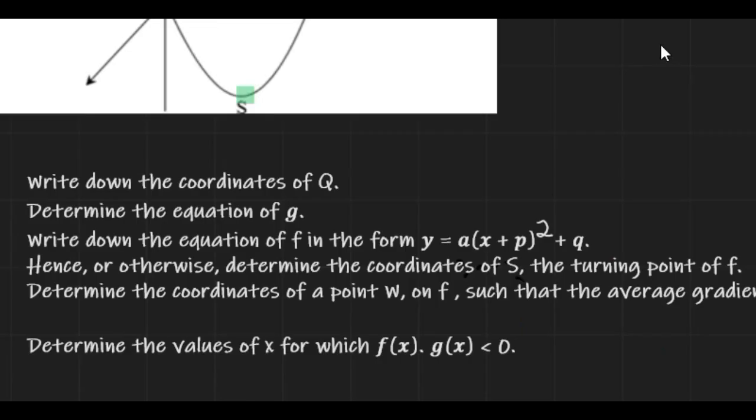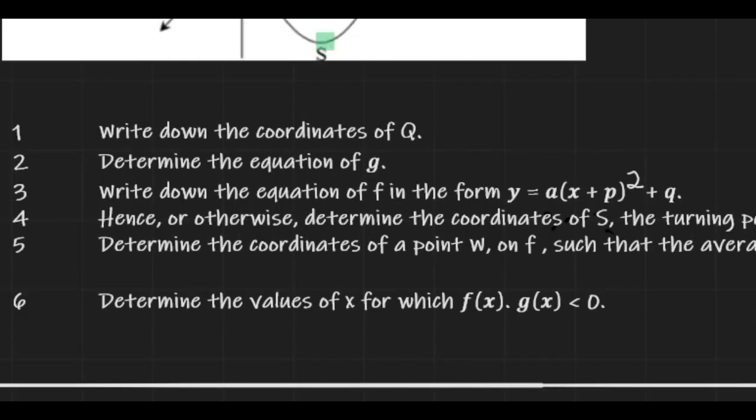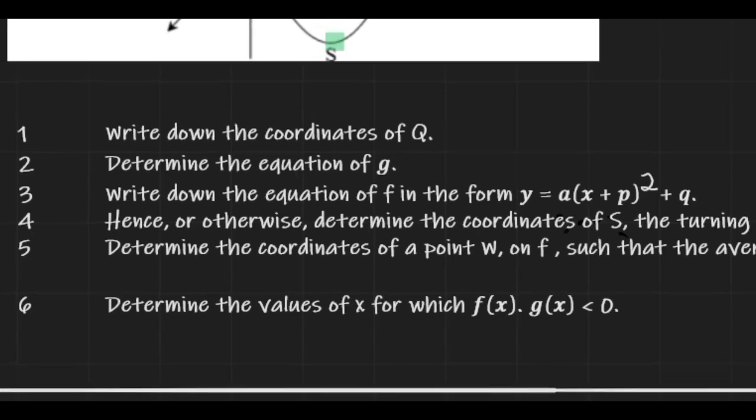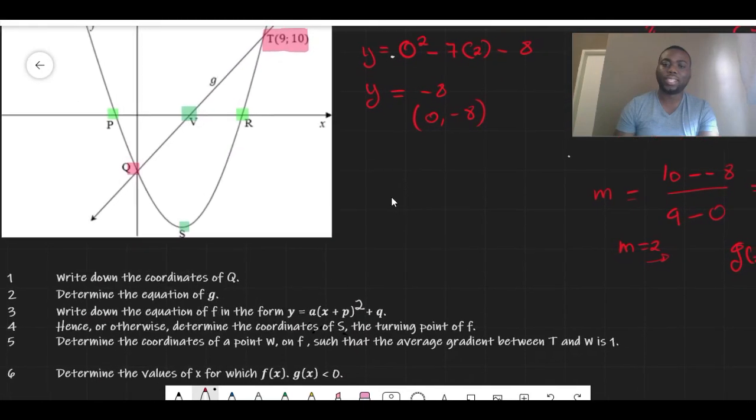And that's it. Question three says write down the equation of f in the form of y = a(x + p)² + q. Now for us to answer this, if you want to change from the standard form to this form, which is a turning point form, there are two ways of doing this.